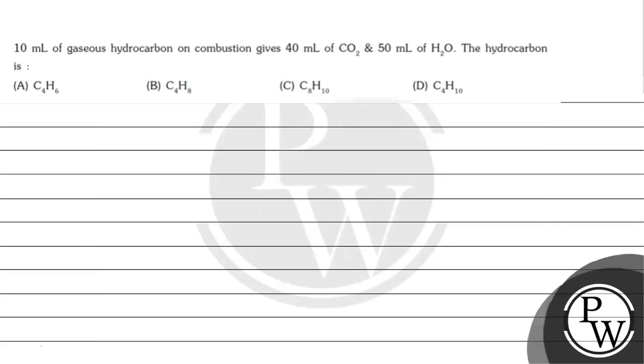Hello, let's read this question. The question says, 10 ml of gaseous hydrocarbon on combustion gives 40 ml of carbon dioxide and 50 ml of water. The hydrocarbon is option A, C4H6, option B, C4H8, option C, C8H10, option D, C4H10.